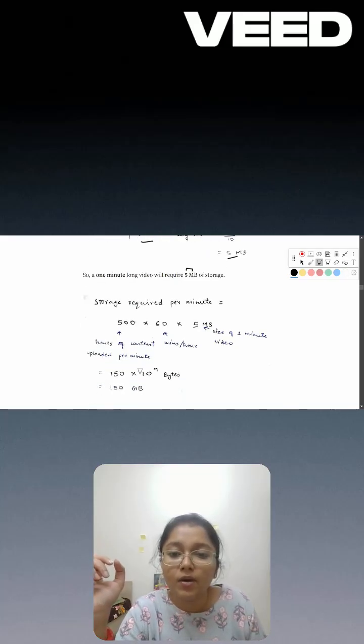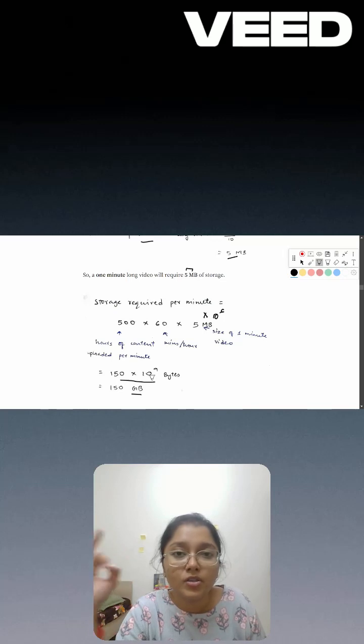Now over here, since we had MB, we have used 10 to the power 6. You can take a copy and try to do this calculation—it should come to 150 into 10 to the power 9. So 10 to the power 9 is substituted with 150 GB.